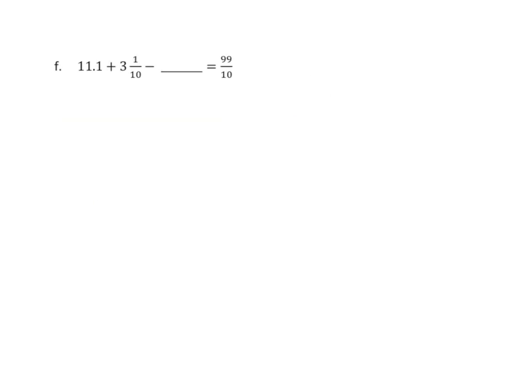Here we have 11 and 1 10th, and we have 3 and 1 10th, and then we subtract something, and we get 99 10ths. Let's rewrite these. I have 11 and 1 10th plus 3 and 1 10th minus blank, and 99 10ths is 9 and 9 10ths. Like other problems, we know that the sum of these two is greater than this. How much bigger is it? Let's simplify. We now have 11 and 1 10th plus 3 and 1 10th, and that would be 14 and 2 10ths minus something equals 9 and 9 10ths.